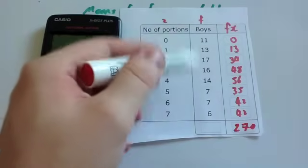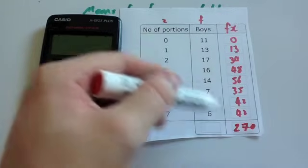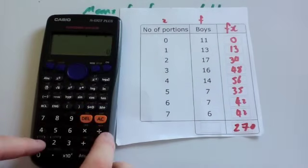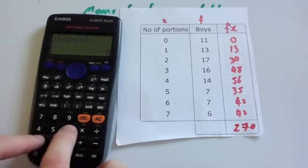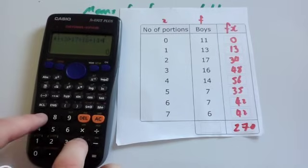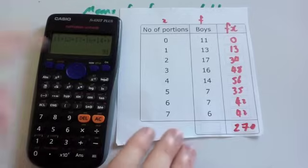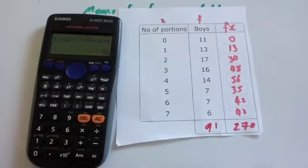Then we need to work out how many boys there were altogether. So remember, we add them all up and we divide by how many. So we need to see how many boys there are. 11 plus 13 plus 17 plus 16 plus 14 plus 7 plus 7 plus 6, and that's 91. So there's 91 boys altogether.